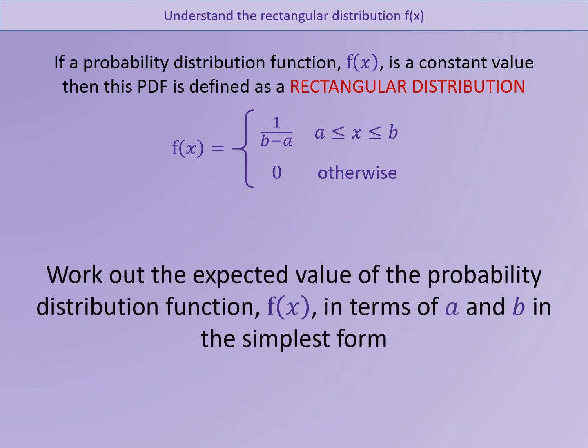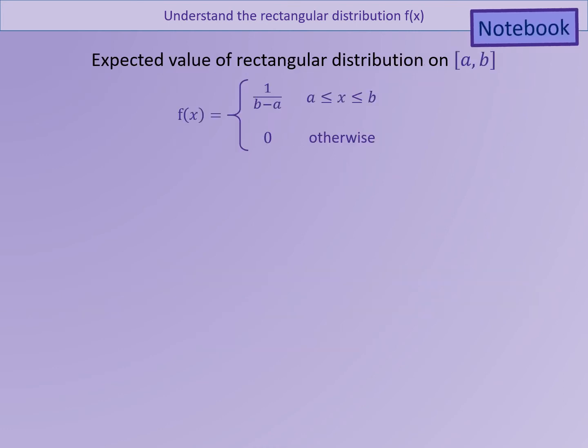And you work out the expected value of the probability distribution function. So you might want to grab your notes out. How do you work out the expected value for a PDF? Once you've got your notes out, have a go and then replay it once you're ready. So I hope you had a go yourselves. So what do we get? Well, we know that if we want to work out the expected value, we use this formula here. Starting at the lowest value, calculating up to the highest value, multiply it by x, times by your function. So the expected value is always x times the function over the whole of the part.